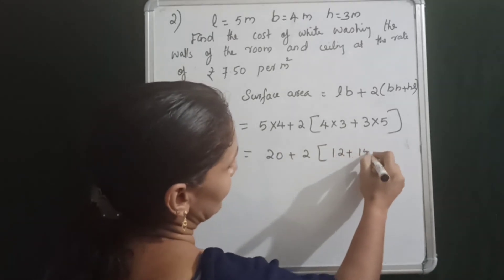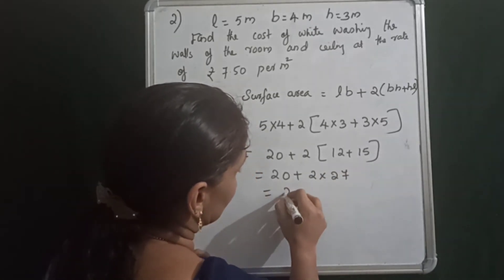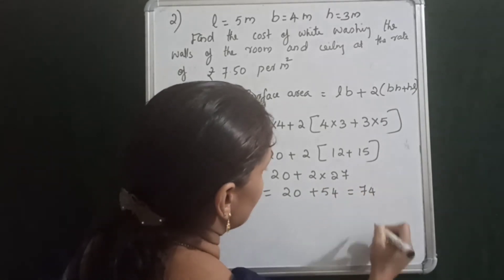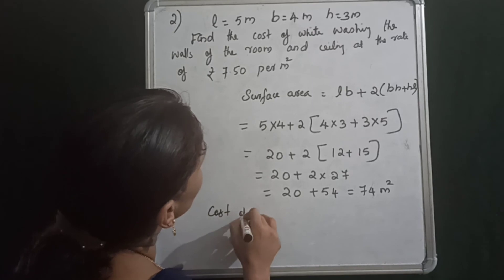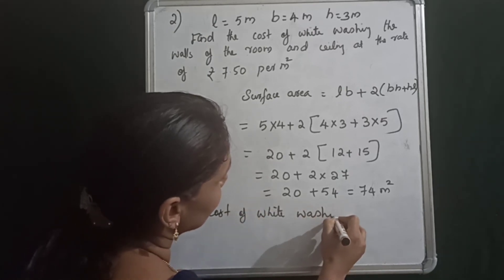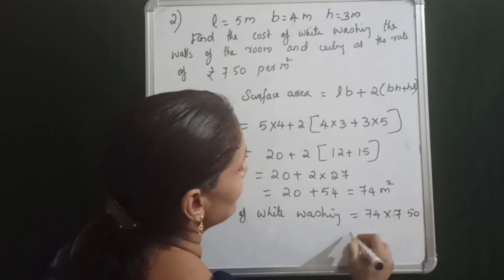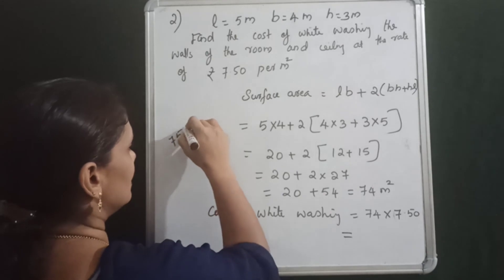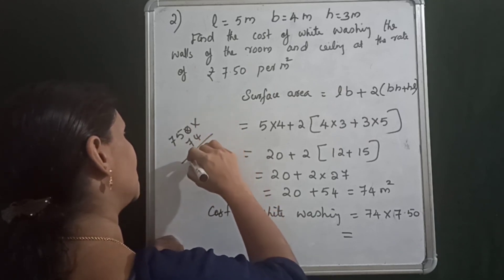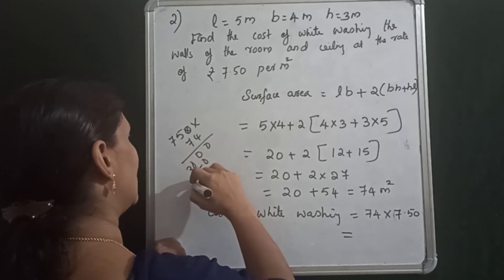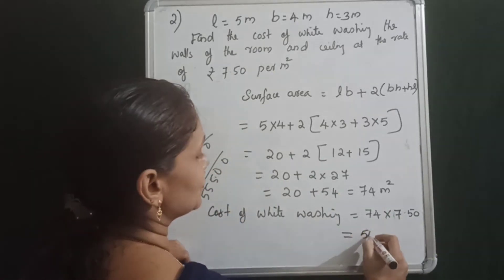For another problem, the area works out to 2 × (12 × 15) + 2 × (12 + 15) = 2 × 180 + 2 × 27 = 360 + 54 = 74 metre square. The cost of washing equals area × rate = 74 × 7.50 rupees, and multiplying gives a total cost of 555 rupees.